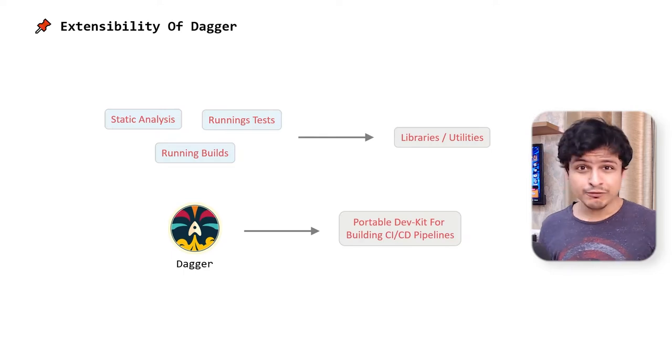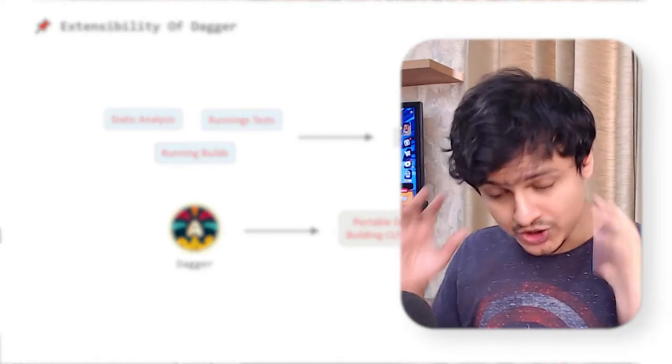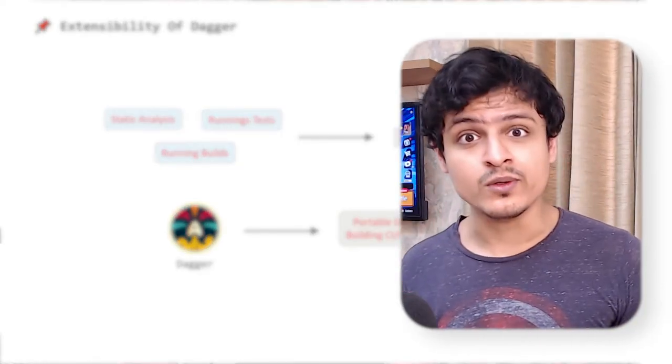Think of it like Java. Java has seen such great adoption thanks to its write-once-run-anywhere philosophy. The ecosystem around Java has seen exponential growth. You can literally find a Java library to do anything.